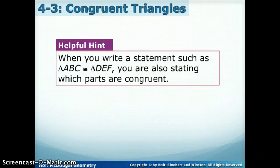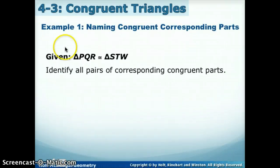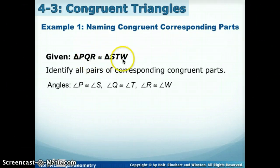When you write a statement such as this, you're also stating which parts are congruent, just like we did with those pictures. So let's practice a couple of those. If I tell you or you're given that triangle PQR is congruent to triangle STW, and you are asked to identify all corresponding congruent parts, let's start with the angles. So if I wanted to say what angle is congruent to angle P, well, I see that P is listed first, so angle S must be congruent to angle P. And then which angle is congruent to Q? Well, it's listed second, so T is congruent to Q, and R is congruent to W.